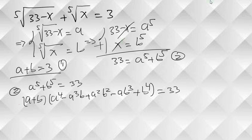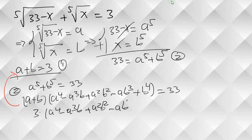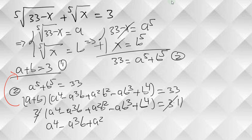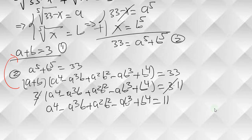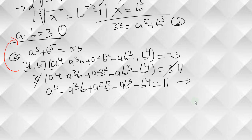We know that a plus b equals 3, so we have 3 times (a to the 4 minus a cubed b plus a squared b squared minus ab cubed plus b to the 4) equals 33, which is 3 times 11. Canceling the 3's, we get a to the 4 minus a cubed b plus a squared b squared minus ab cubed plus b to the 4 equals 11. Let's call this equation 3.